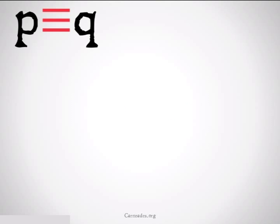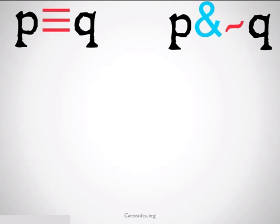Let's take a look at an example. Let's say we want to compare the following propositions: P is materially equivalent to Q, and P and not-Q, to see if they're consistent or inconsistent.